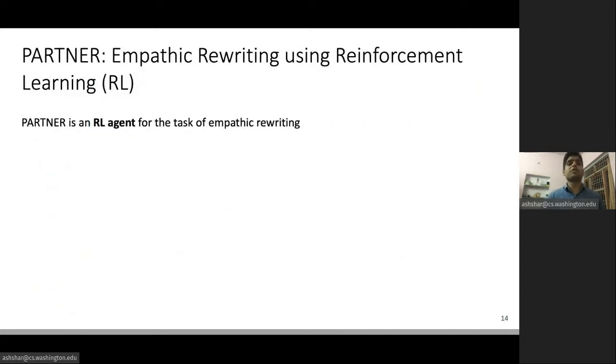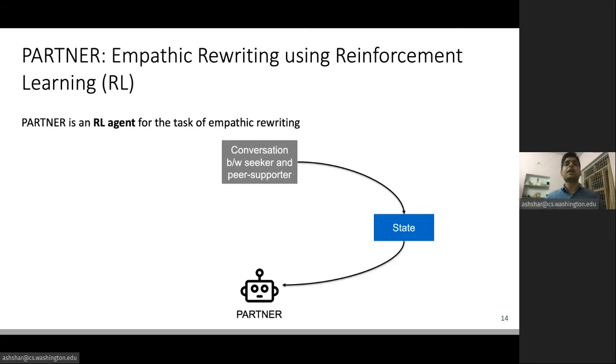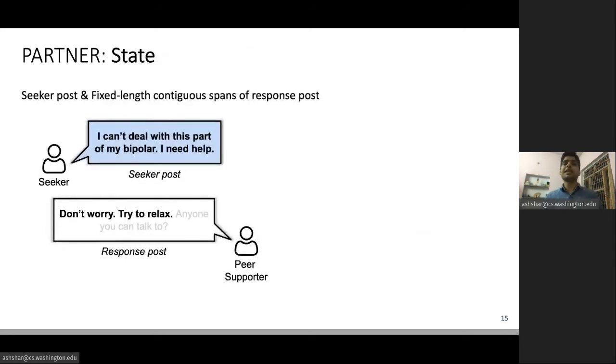Our main contribution towards solving empathic rewriting is PARTNER, which is a reinforcement learning agent for the task of empathic rewriting. Here we use the standard RL setting with states, actions, policies, and rewards. In our setting, PARTNER works on a conversation between a seeker and a peer supporter. It will first extract a state from the conversation, and based on the state, it will perform a set of rewriting actions. And finally, it will get some rewards for training. In the next slides, I will describe the different components of our RL agent.